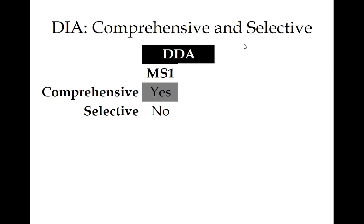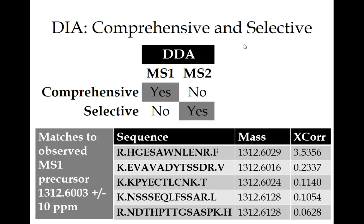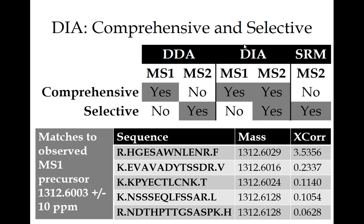Comparing DIA to DDA: DDA acquires comprehensive MS1 data but the MS2 is not comprehensive — it's only a subset. The problem is we can't take an MS1 spectrum, look at the precursors, and make a good identification without MS/MS data. For example, one particular mass seen with 10 ppm tolerance from MS1 can map to many possible sequences — you need that additional selectivity from MS/MS to make an ID. DIA gives us both selective and comprehensive MS2.